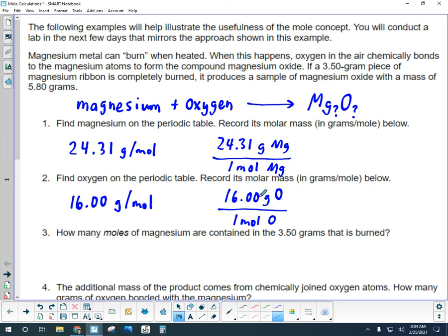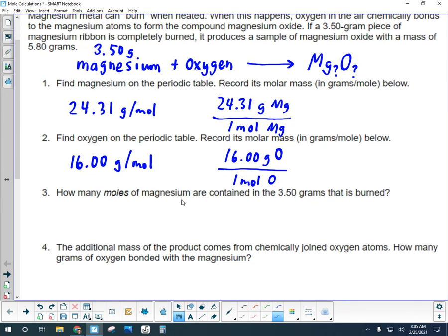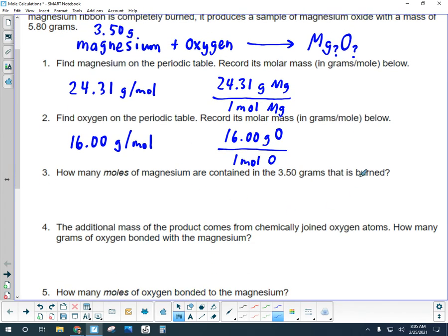And you can see we've set up two ratios here that can be used as conversion factors. So going back to the problem, it says that we have a 3.50 gram piece of magnesium ribbon burning. We're going to assume all 3.50 grams reacts. And we want to do a mole conversion from grams for magnesium. So I will start with my given measurement, 3.50 grams of magnesium.